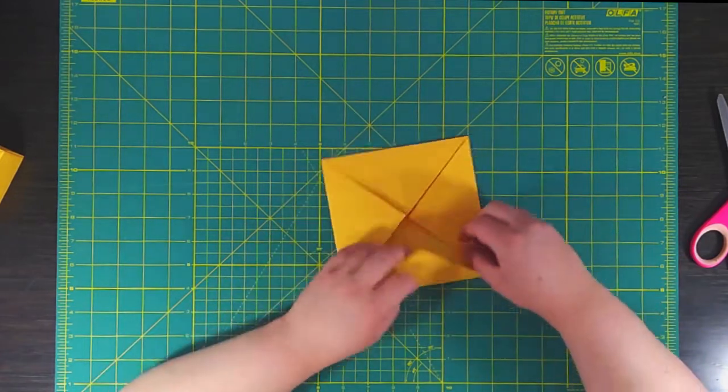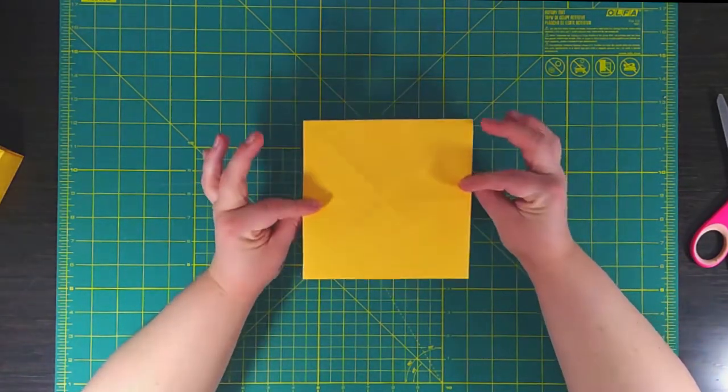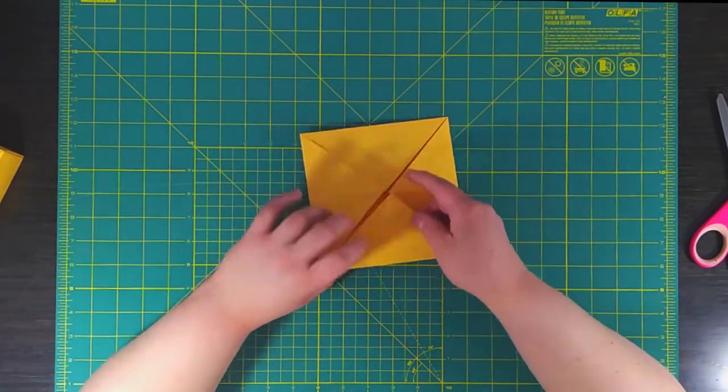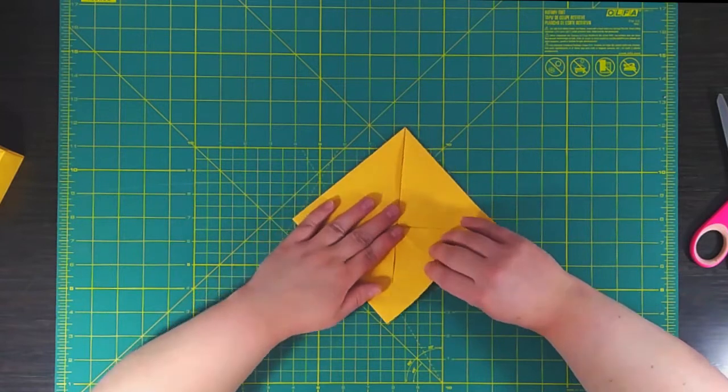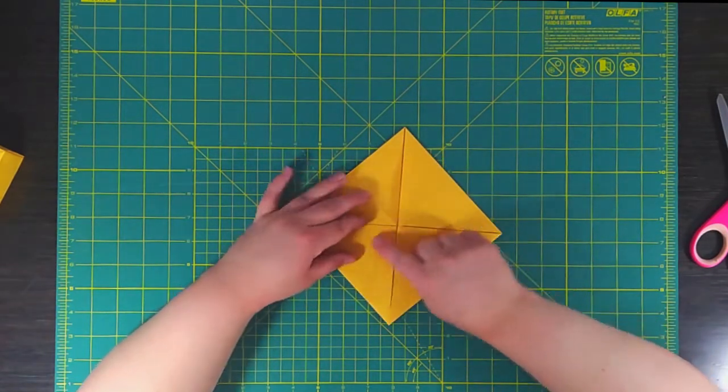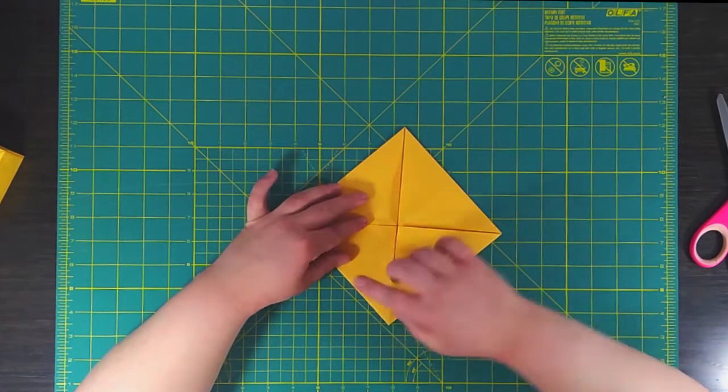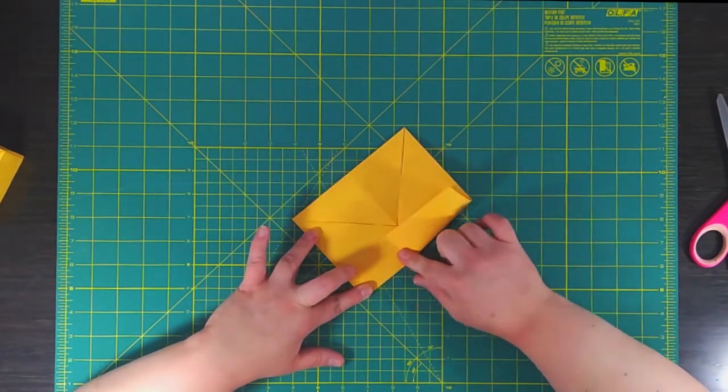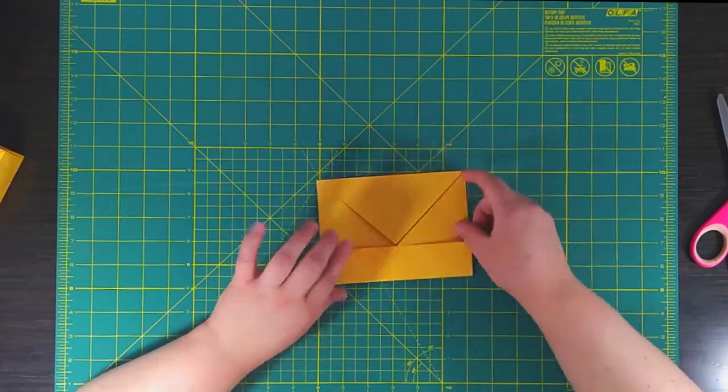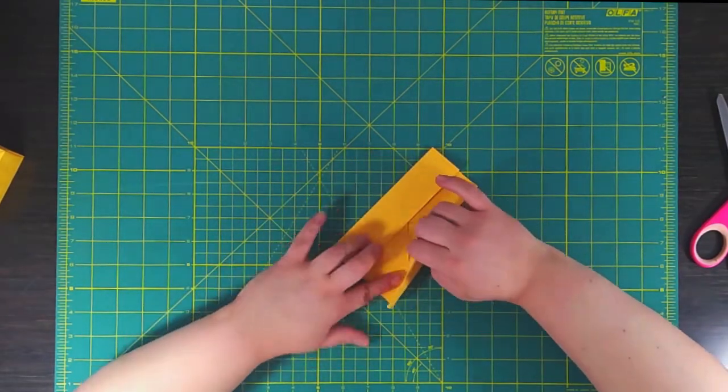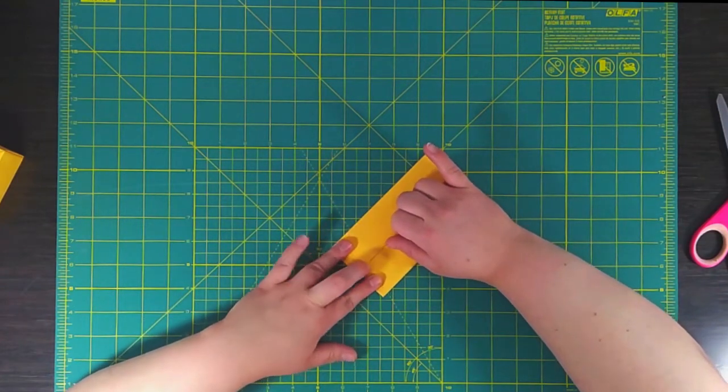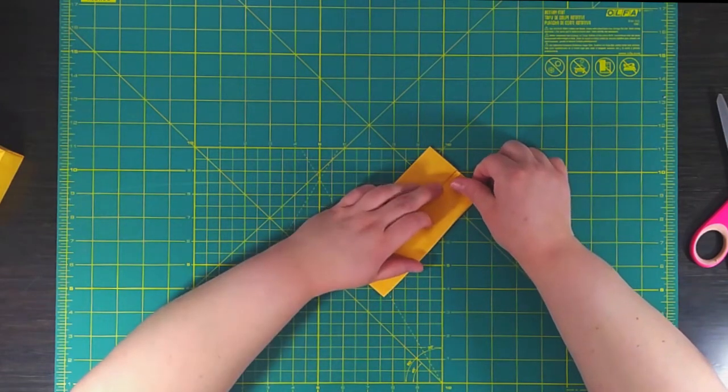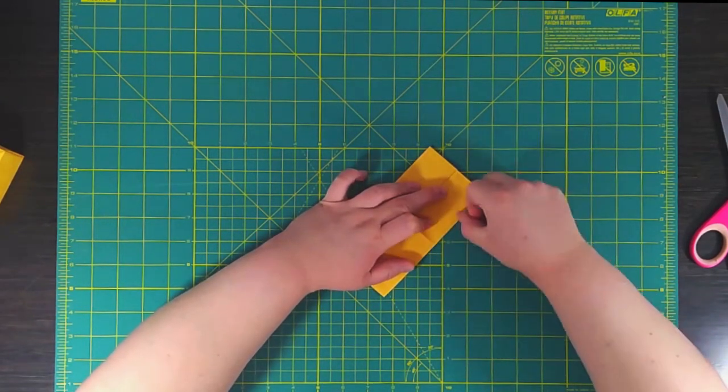Okay now that that stuff's done the paper should look like this. Now we're going to start on making the sides of the box. We're going to take one side and then fold it just into the center point going across the middle and you're going to do the exact same thing on the opposite side. Just make sure that they're not overlapping at all.